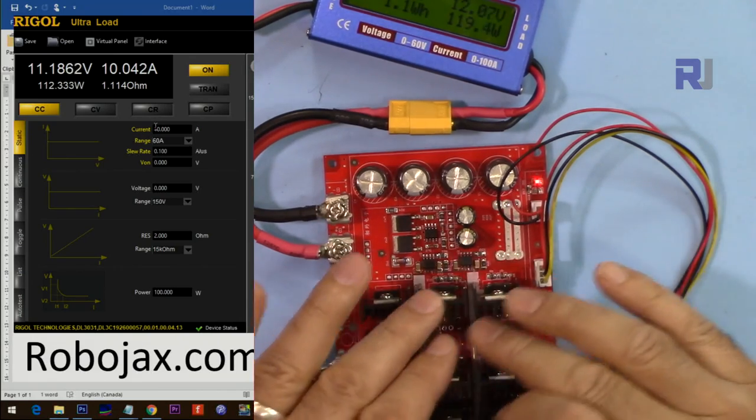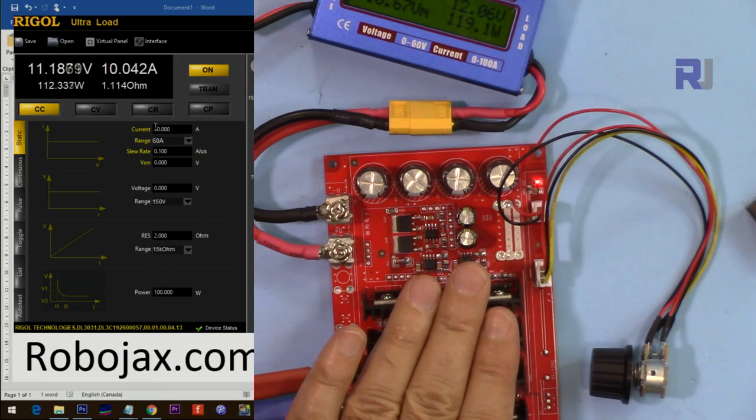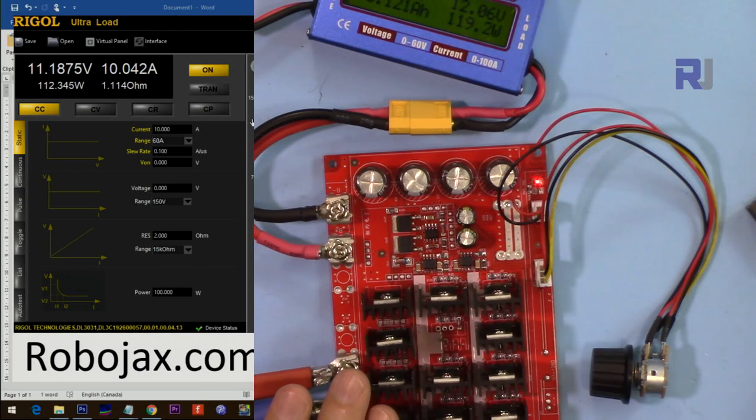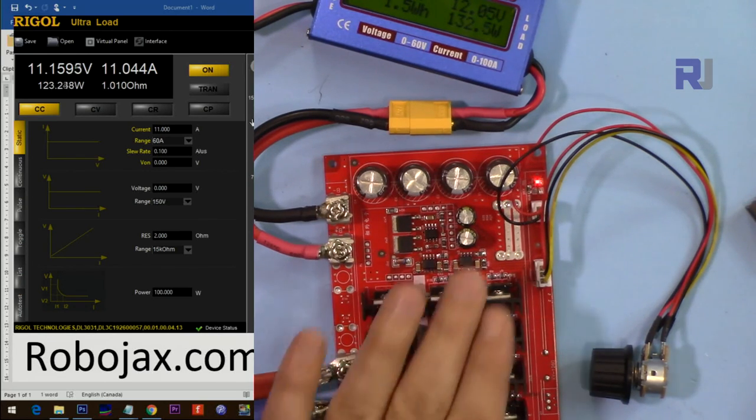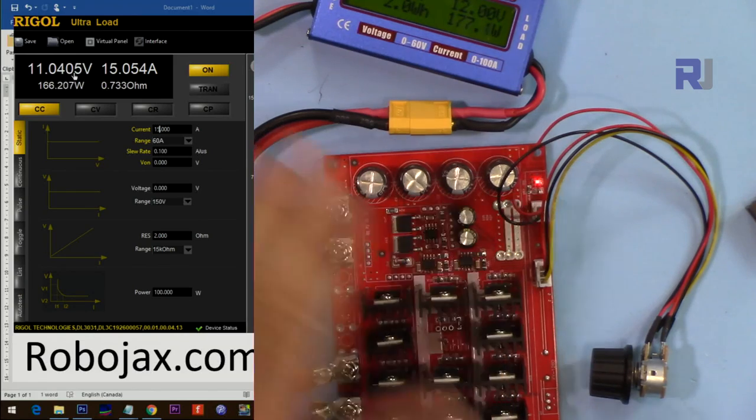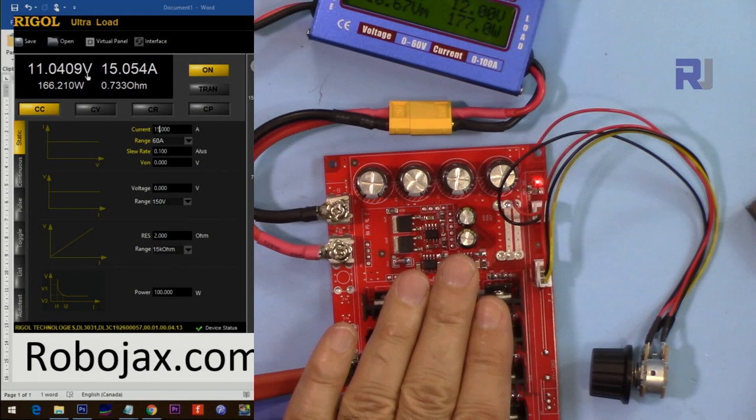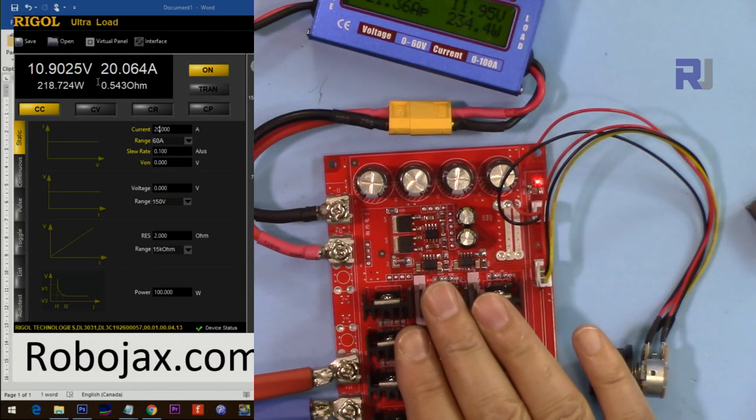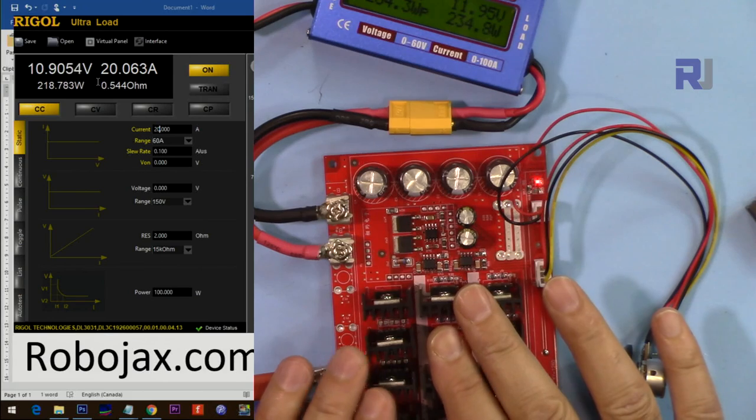So let me do it 11, 12 amp, 13, 14. Now we are at 15 ampere. I'm increasing it from here. 16, 17, I'm going to 20.